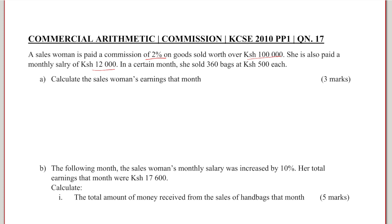Now, what we need to get is the commission from the sales. We shall get the total sales by multiplying the 360 bags she sold by $500 each. So the total sales will be 360 multiplied by $500, which gives us $180,000. That is the total sales.